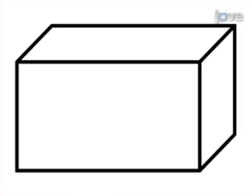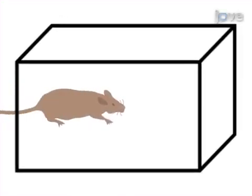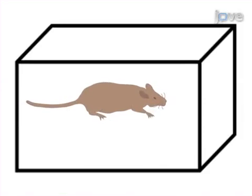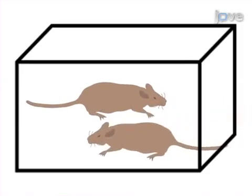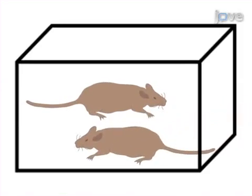The first step is to house an adult male rat together with a sterilized female for a period of at least one week.